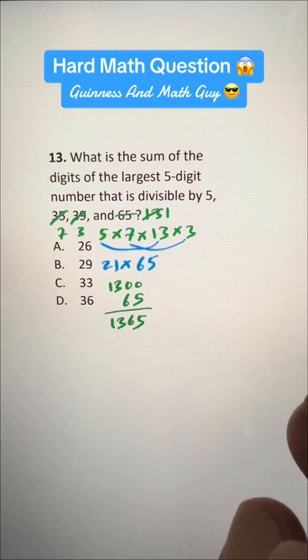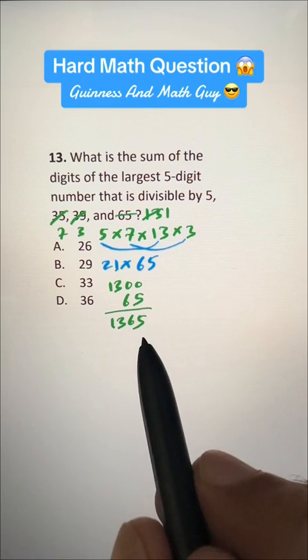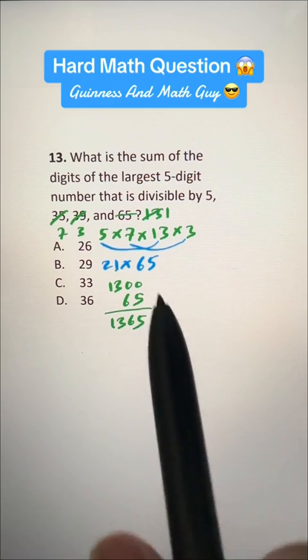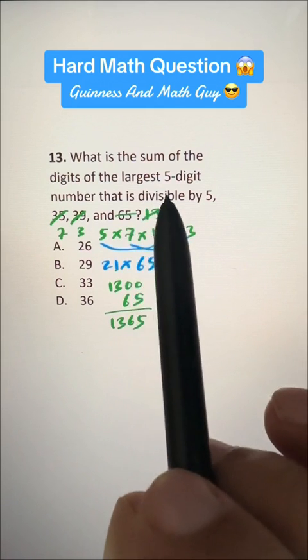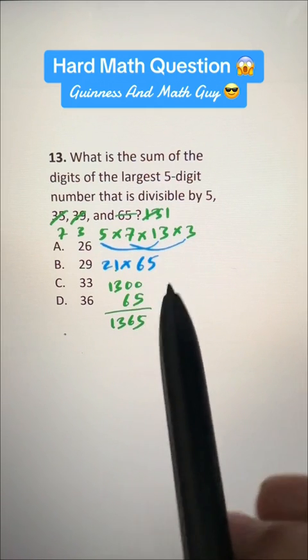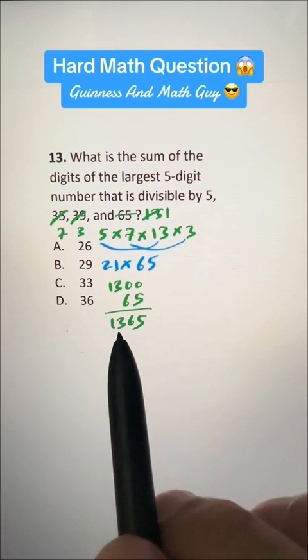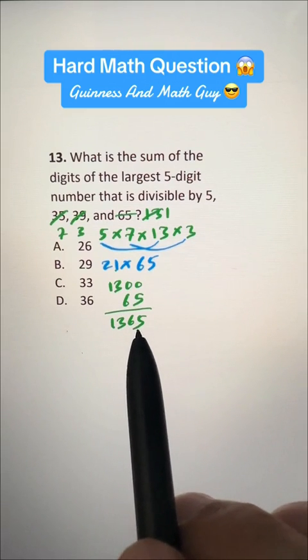Okay. Now, we want a 5-digit number, largest 5-digit number, that is divisible by 1365.